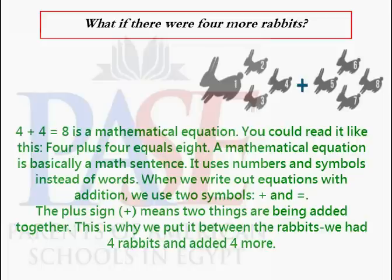4 plus 4 equals 8 is a mathematical equation. You could read it like this: 4 plus 4 equals 8. A mathematical equation is basically a math sentence — it uses numbers and symbols instead of words. When we write out equations with addition, we use two symbols: plus and equals.